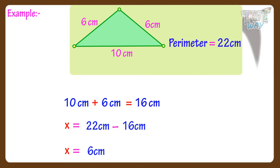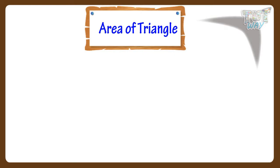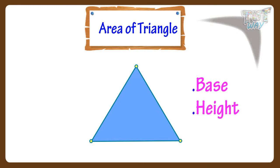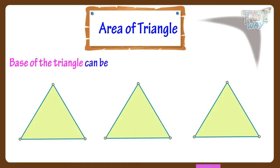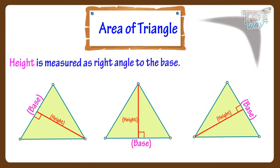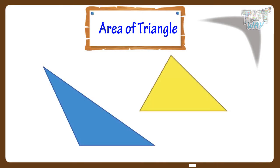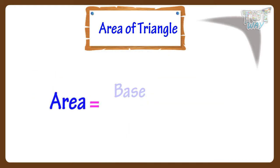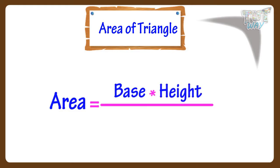Now we will be learning how to find the area of a triangle. Here we have a triangle — we have to find its area. For finding its area we need two things: base and height. The base of a triangle can be any side of the triangle, and height is measured at right angle to the base. Draw a perpendicular to it to get the height of the triangle. The area is equal to base multiplied by height divided by 2.